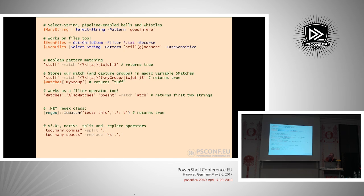The $matches variable also supports named groups. If you do a capture group, you can give it a name. Here the 'tuff' part of the word 'stuff' is grouped in a named capture group called 'mygroup', and we can index into $matches to get exactly what was matched. Had I substituted the T for a W, it would have shown 'woof' instead of 'tough'. The match operator also works as a filter operator — every scalar comparison operator in PowerShell doubles as a filter. So instead of one value on the left, you give it a collection, and it returns every object that matches the condition on the right. This is a great way to filter a string array without piping to Where-Object.